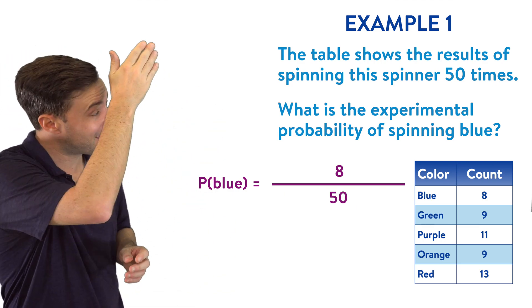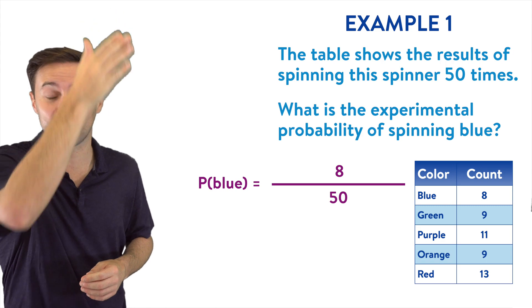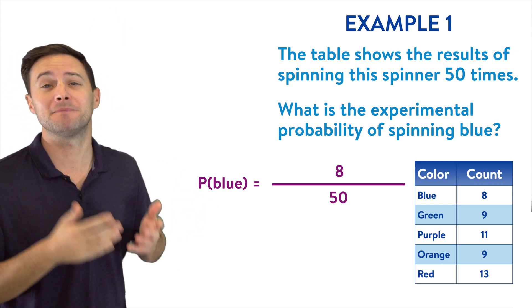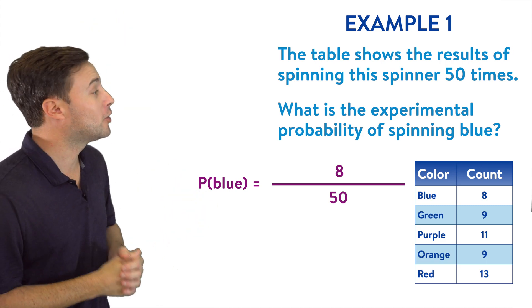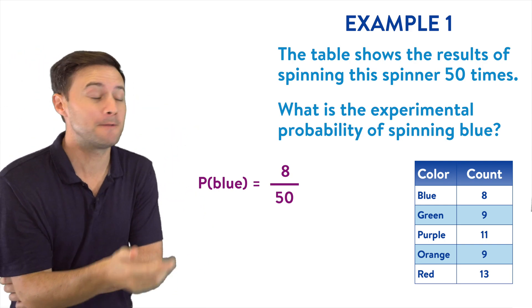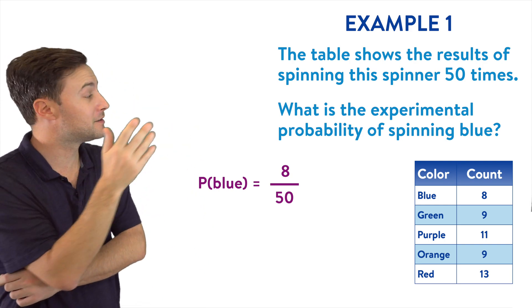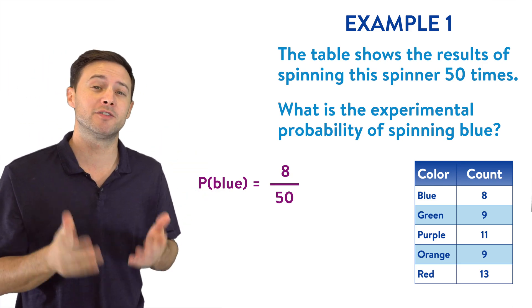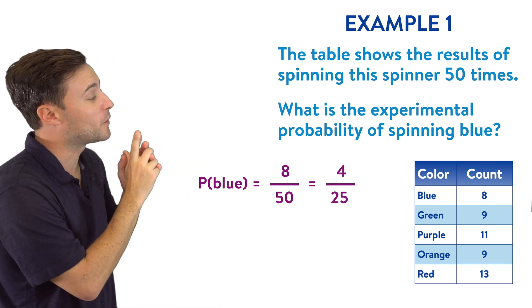You could even double check by finding the sum of all of those counts. And if you add them up, the answer is 50. So the probability of blue is going to be 8 over 50. But we can simplify that, divide the numerator and denominator by two, and that gives us 4 over 25.